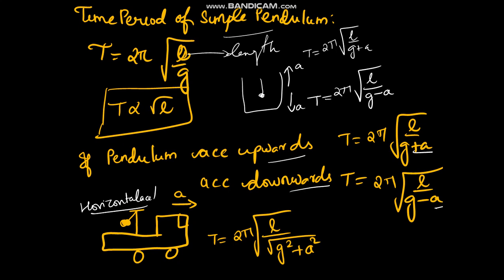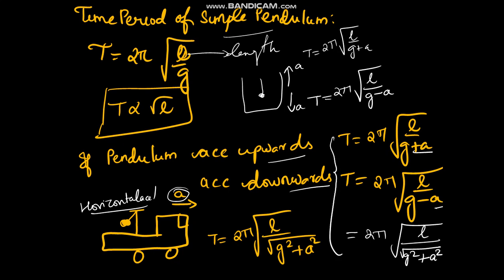In the case of horizontal acceleration — suppose the pendulum is placed in a lorry moving with acceleration a — the time period is given by 2π√(L/√(g²+a²)). So these are the three cases we have learned.